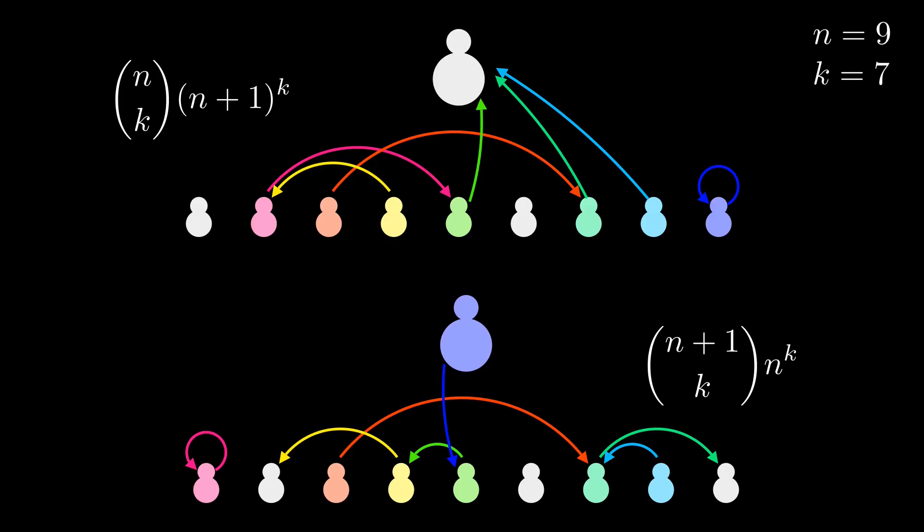The fights counted by the bottom set are similar, except we are allowed to give the adult one of the balloons, but no one is allowed to aim at the adult. Now we have to come up with an injection from the top set to the bottom set.